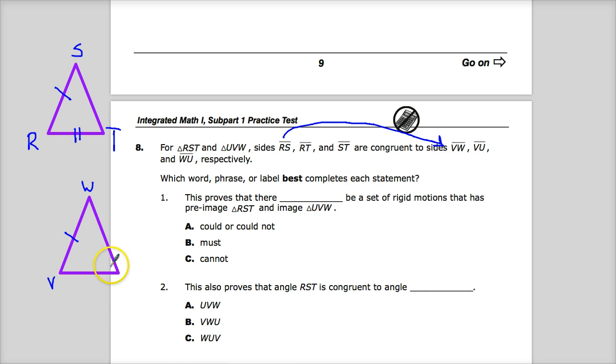So what I might do is try VW right there, and then RT would be down here, and it should be VU. So if I do that, and then the last one, ST, I'll mark with 3, and WU.